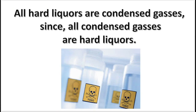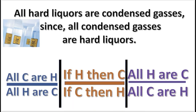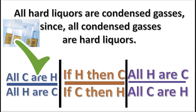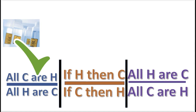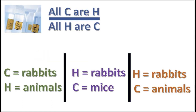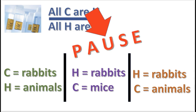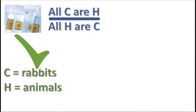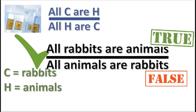Here is another practice problem. What is the form of this argument? Notice that C and H stand for terms, not whole statements. Now, what set of terms proves that this argument form is invalid? This substitution makes the premise true and the conclusion false.